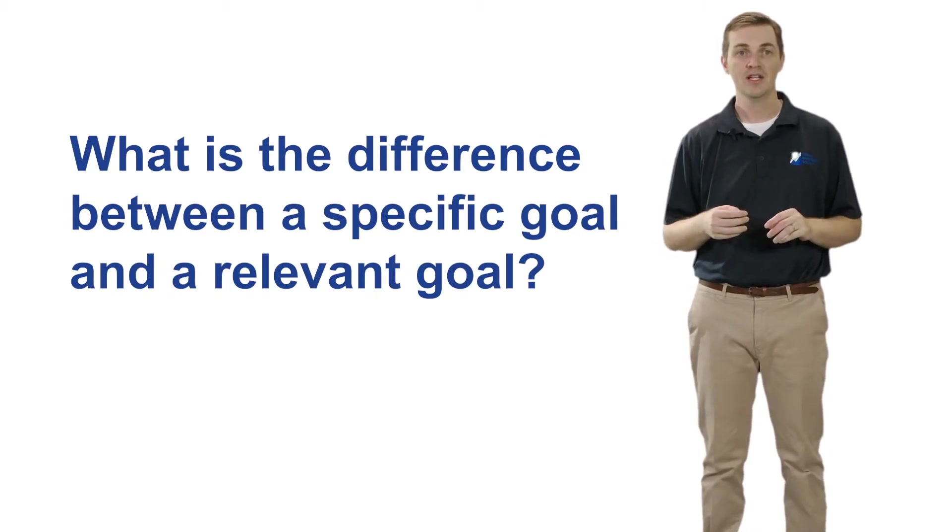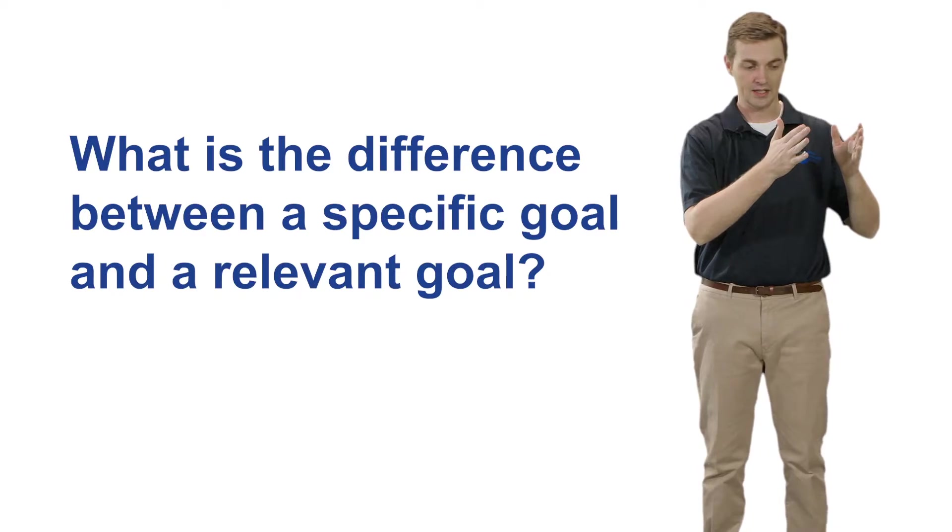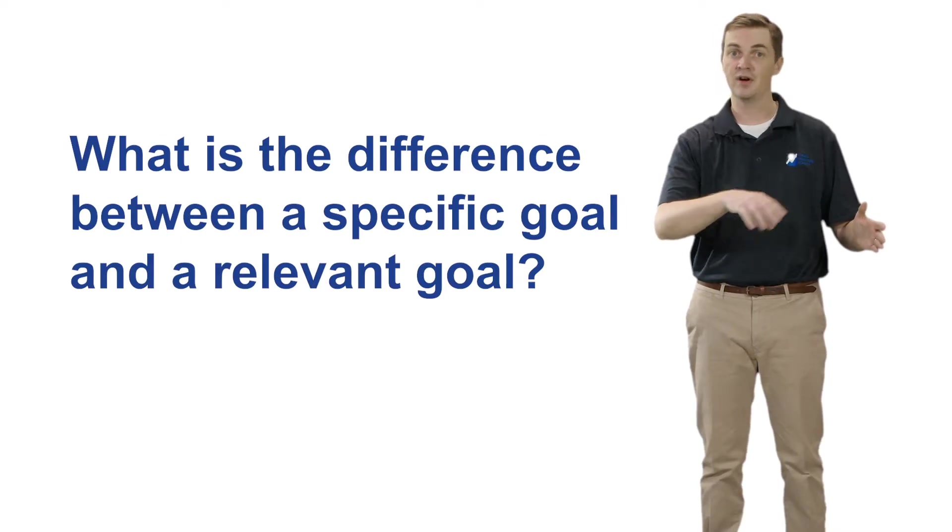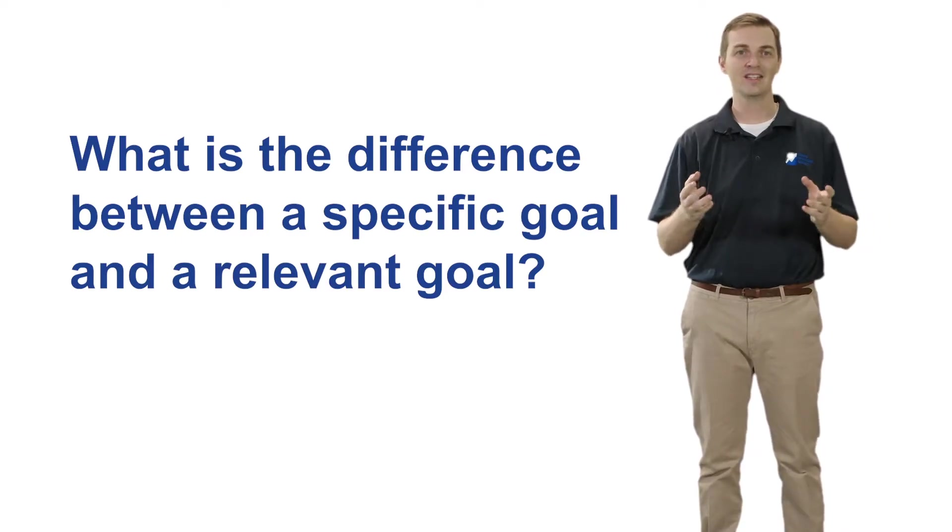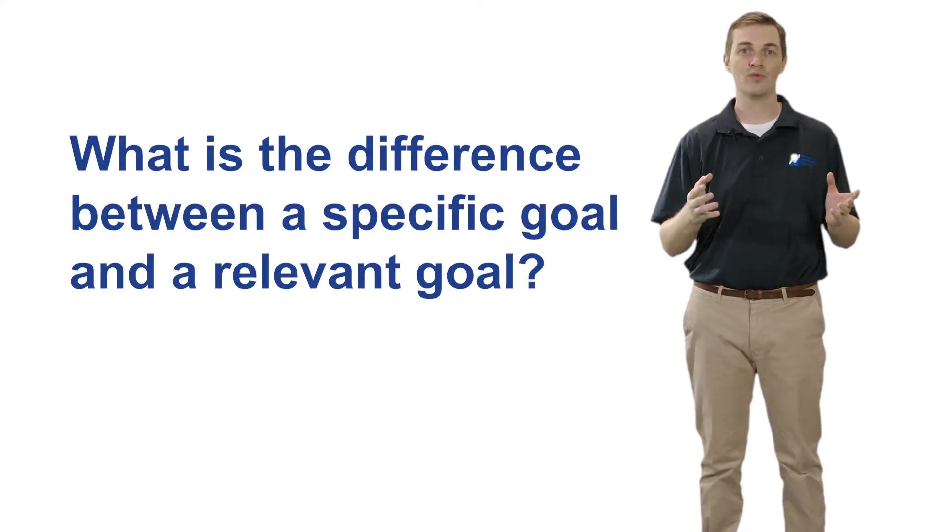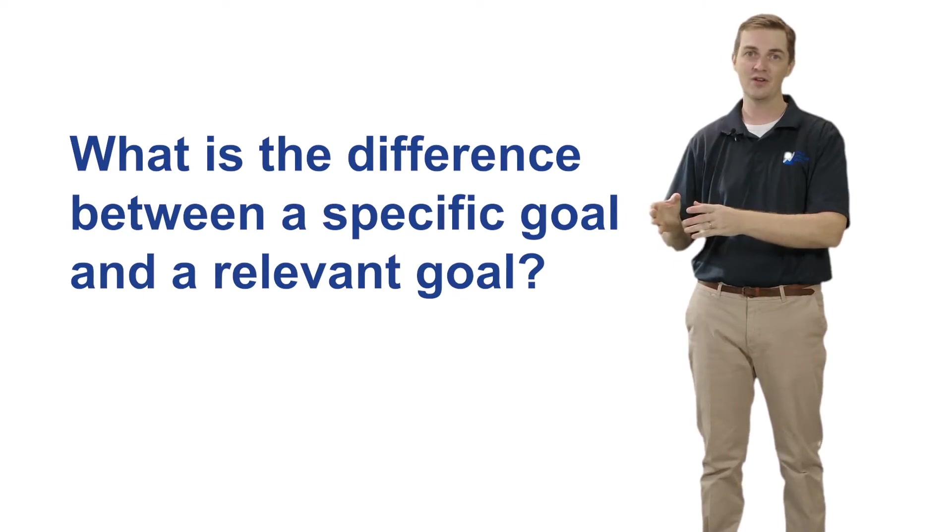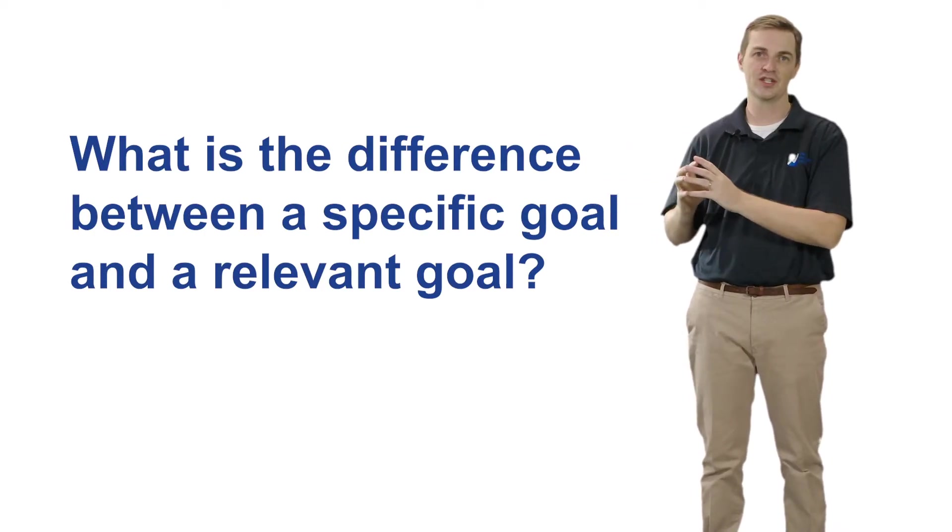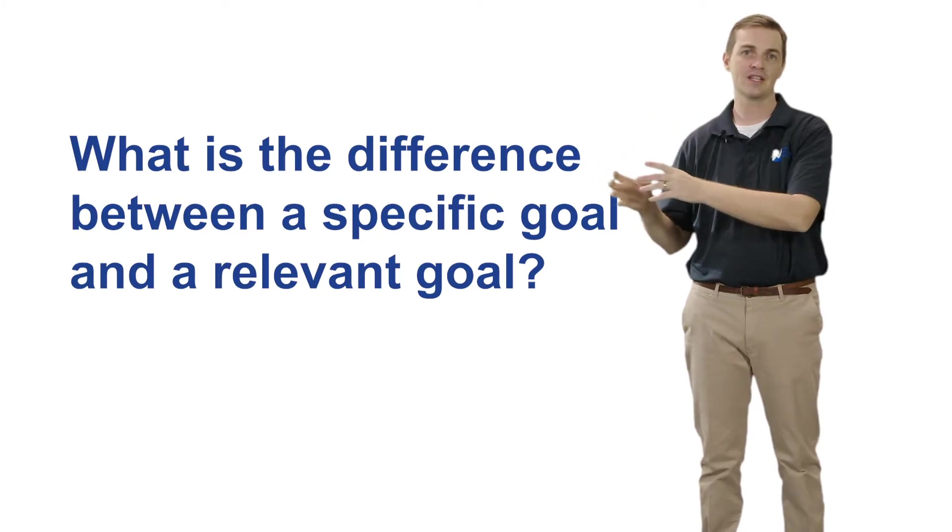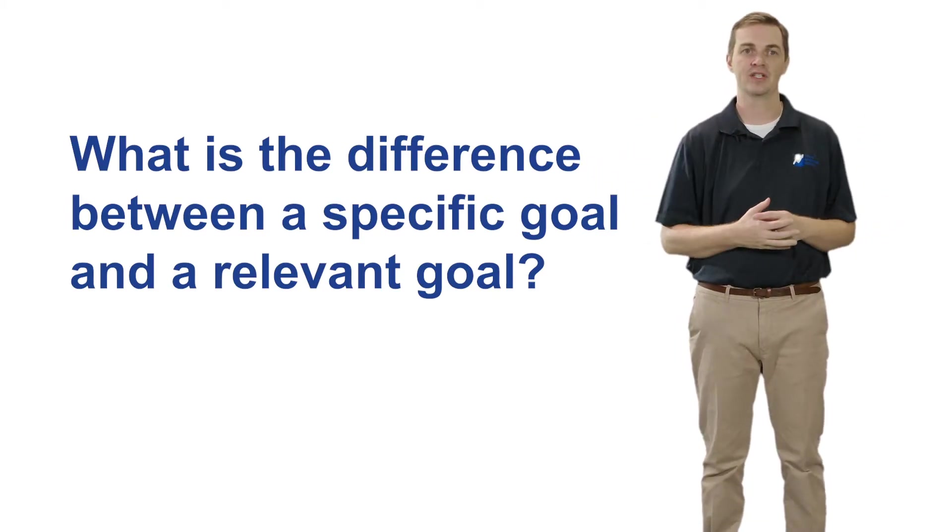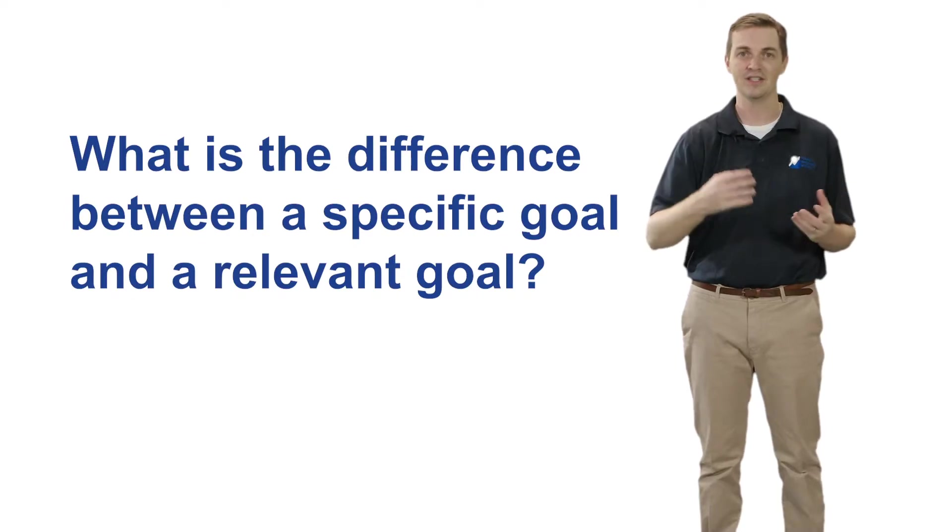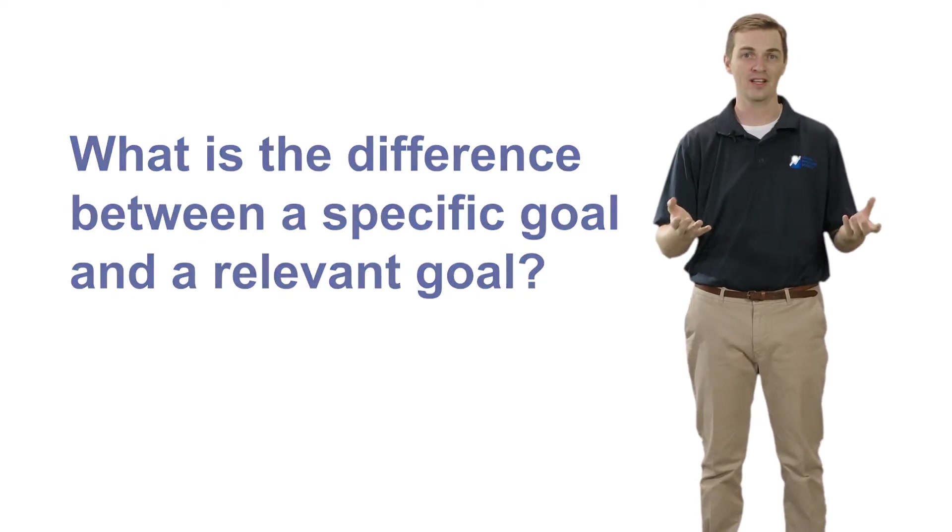It's a great question. So a specific goal is a specific goal that is clearly defined and is something that you're able to define and work towards. Relevant is one that is a little more difficult to explain but basically a relevant goal is something that is worthwhile to you. So you may have a specific goal that is measurable, that's attainable, but is something that you don't really care about or something that is just completely outside of your normal life or your desires or your passions. Relevant means that this goal means something to you. It means something to the people around you and so that's what we mean by a relevant goal.